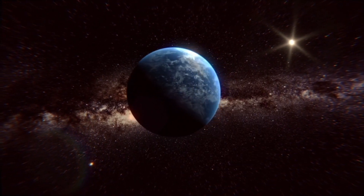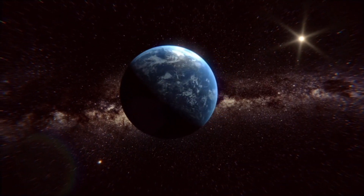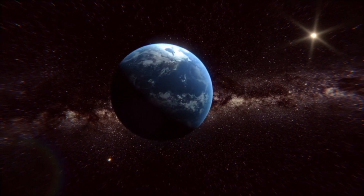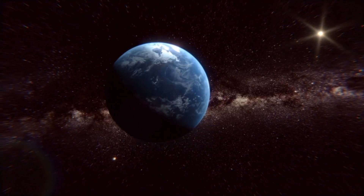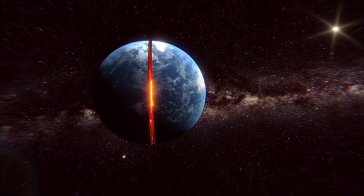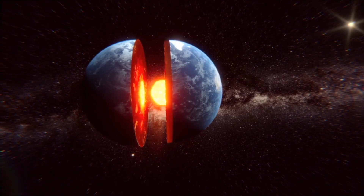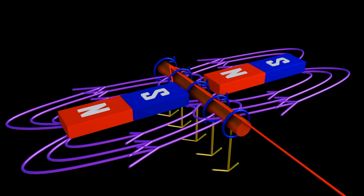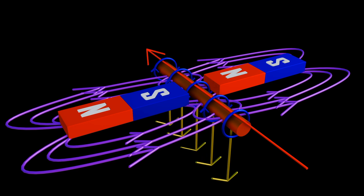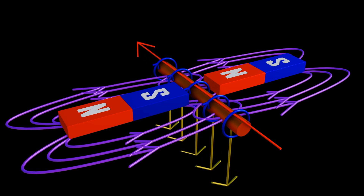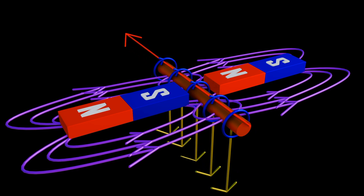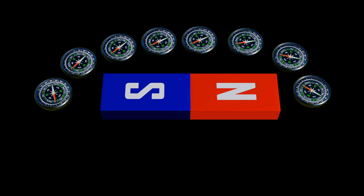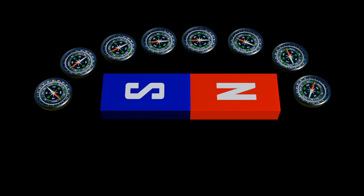In our previous video we talked about the importance of Earth's magnetic fields — you can check it out. A bar magnet is a material which has magnetic fields. Magnetism and electromagnetic fields are very broad topics, but we will just briefly cover what they entail.